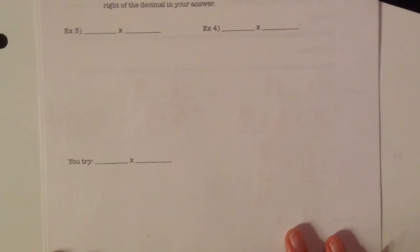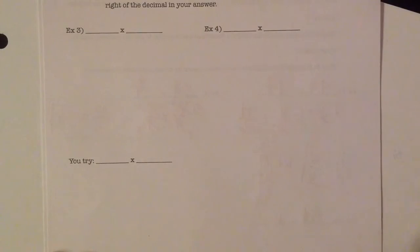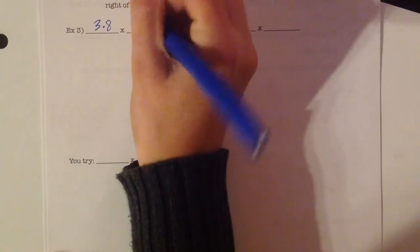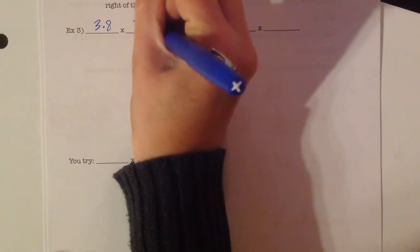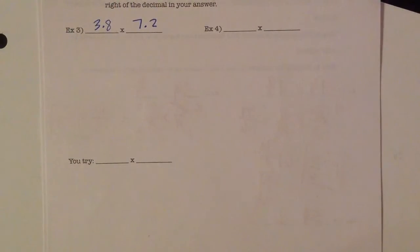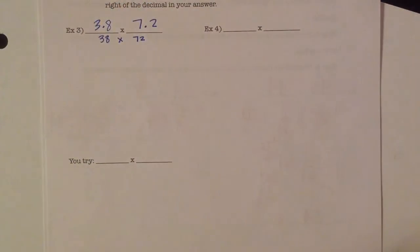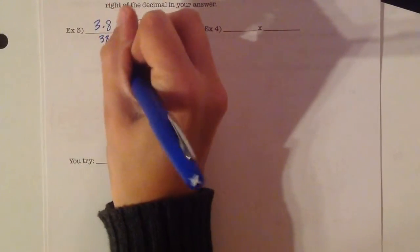So let's look at the first problem. We've got 3 and 8 tenths times 7 and 2 tenths. So again, I'm ignoring the decimals so I'm basically doing 38 times 72. So I'm going to write that down here and multiply.